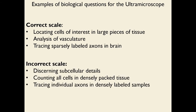In contrast, questions at the incorrect scale include any question that involves discerning subcellular details — for example, where are the mitochondria inside cells in a particular organ. You are just not going to be able to do that with this technique. Another thing that will not work is counting every cell in very densely packed tissue, because we won't be able to distinguish groups of cells from really big cells. Finally, tracing individual axons in densely labeled samples won't work because the probability that axons will come close together and not be distinguishable due to resolution limitations will make that question intractable.